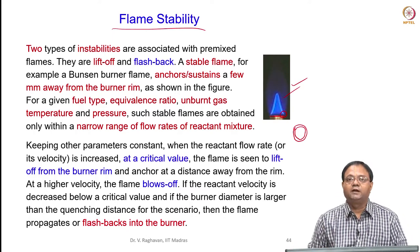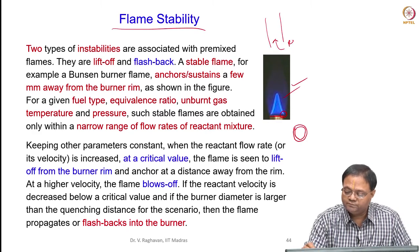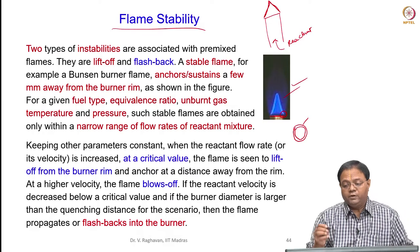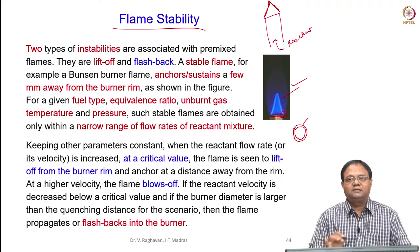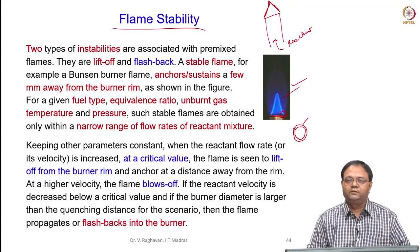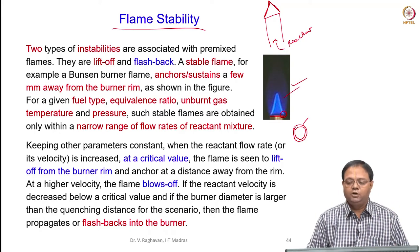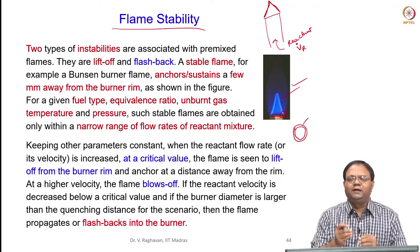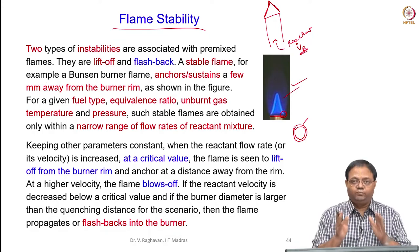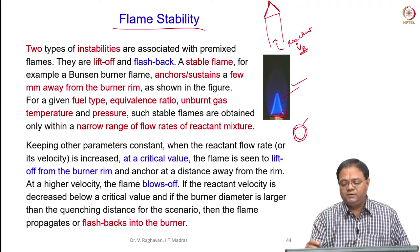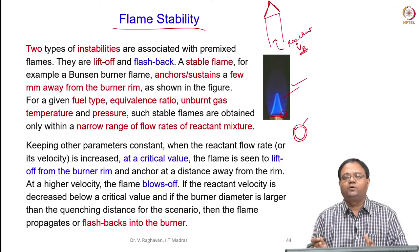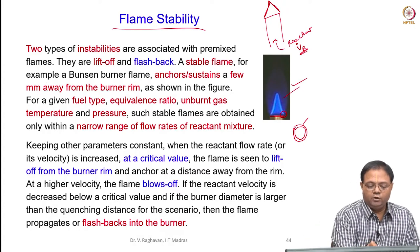When you steadily supply reactants and the flame does not change its shape, we can say a steady, stable flame is established. In the Bunsen burner, we supply reactants, a flame forms, and it anchors a few mm from the rim. If the reactants are fed at a steady state and the flame does not change shape or oscillate, a stable flame exists. The volumetric flow rate of reactants has a small range in which stable flames can be established. If you cross these limits, we see two types of instabilities in premixed flames.